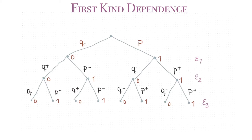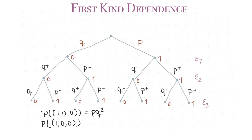Under independence, the probability of the sequence 1, 0, 0 was p·q². Under first-kind dependence, the probability of 1, 0, 0 is still p for the first outcome, but then Q- squared for the two tails — because the first outcome was a 1, so the tails are weighted down. That means the probability of sequence 1, 0, 0 under first-kind dependence is actually smaller than under independence.